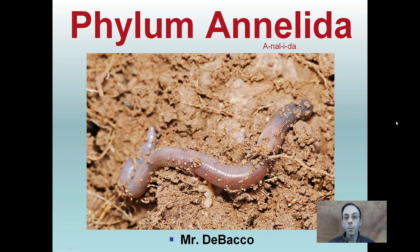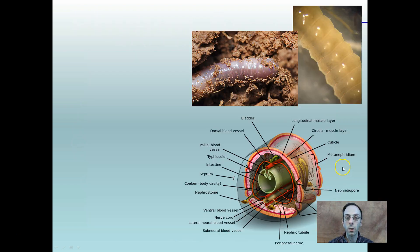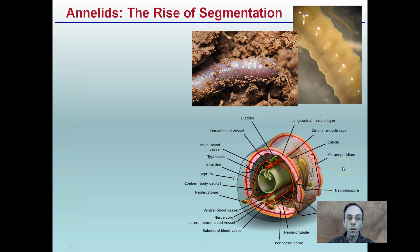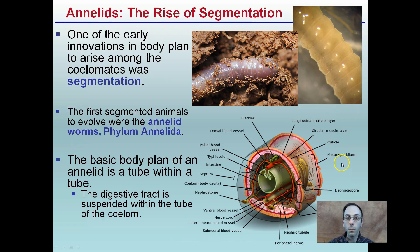Here we're looking at the animal phylum Annelida. If you recognize this picture, this is the phylum that the earthworm falls under. What's key about this particular phylum? It's the rise of segmentation. This is one of the early innovations of the body plan of coelomates. Segmentation is one of those key factors, and this is the first phylum that shows this as an evolutionary development.